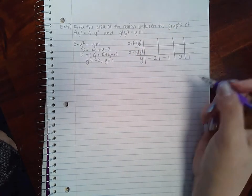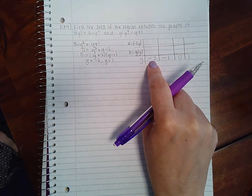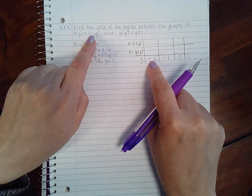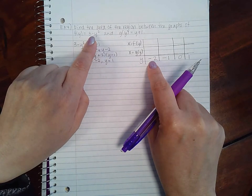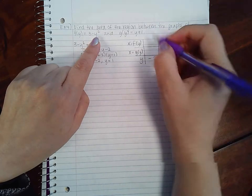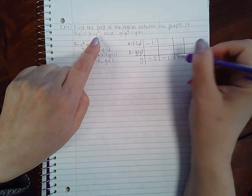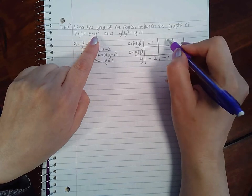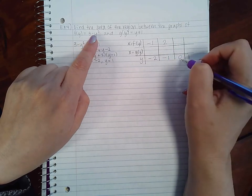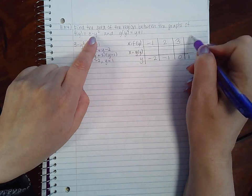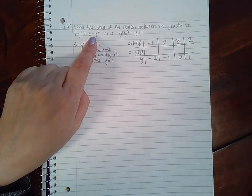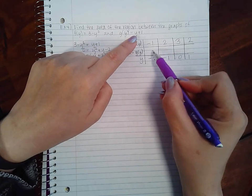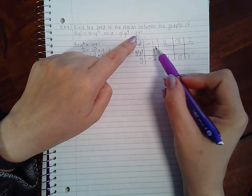If y equals -2, what x value do I end up with? That would be 3 - 4 which is -1. If I plug in -1, I'd have 3 - 1 which is 2, then 3, and then also 2.